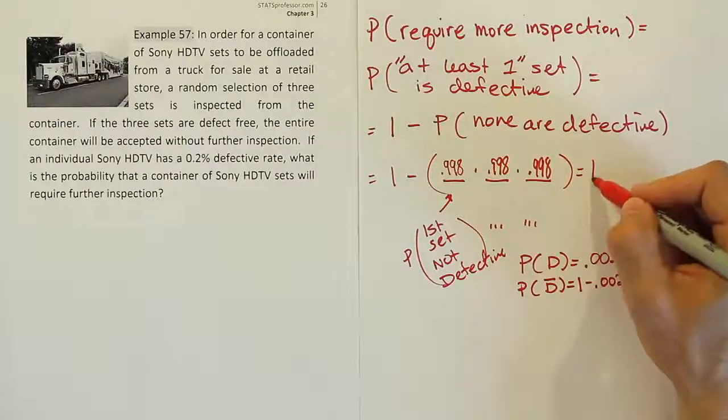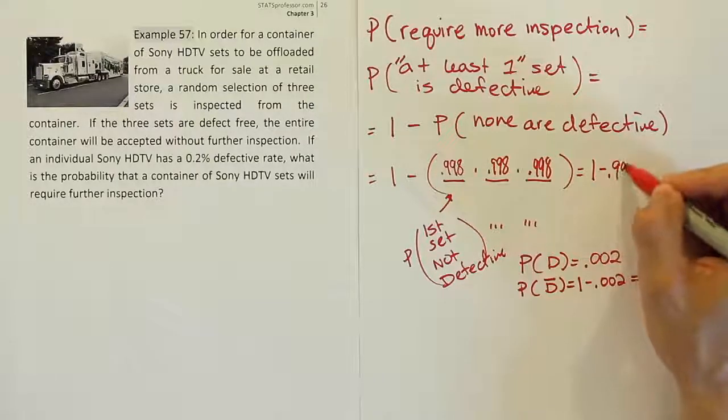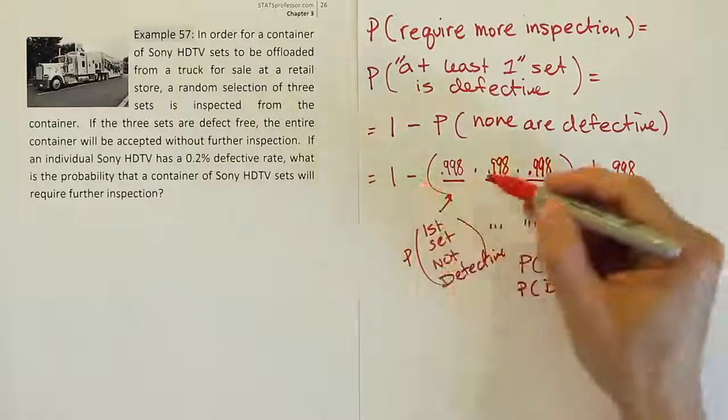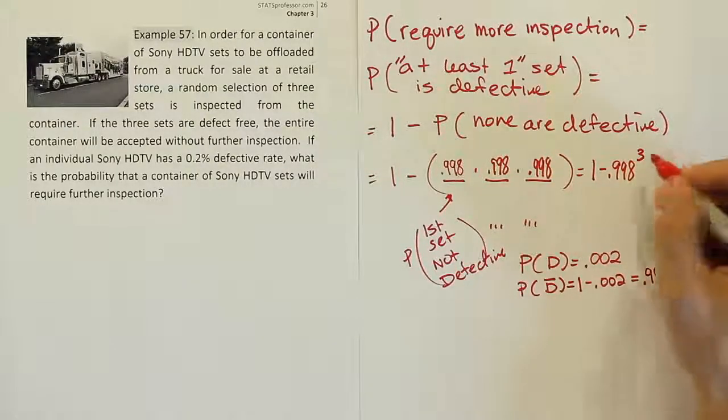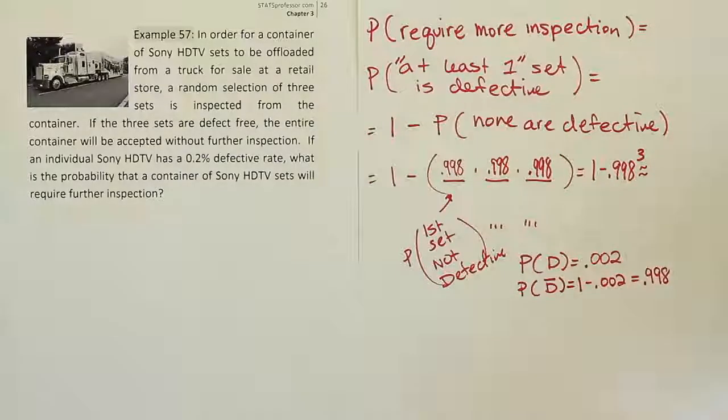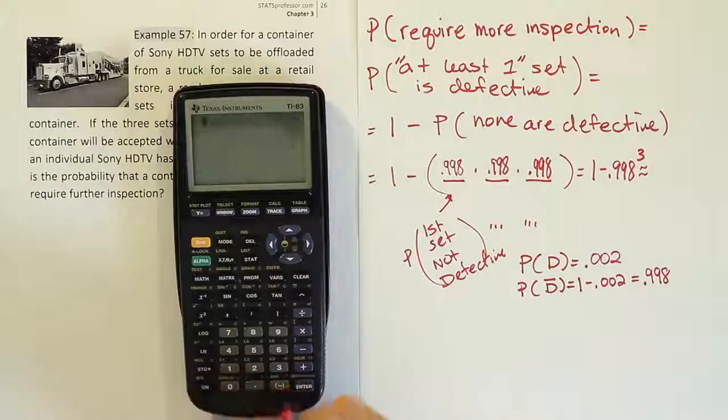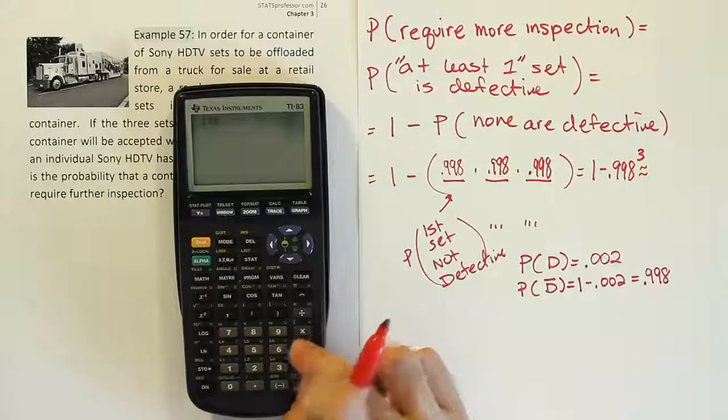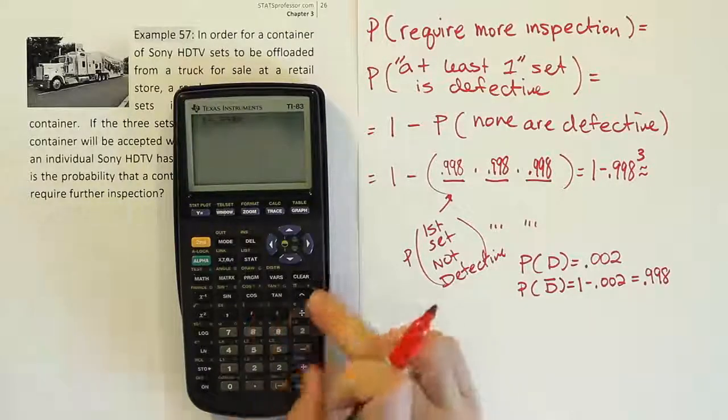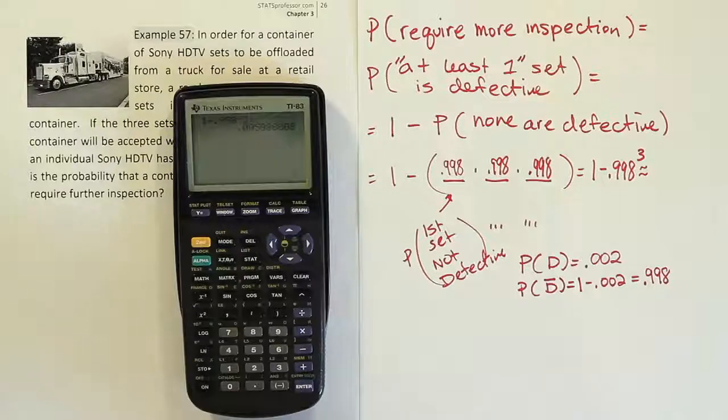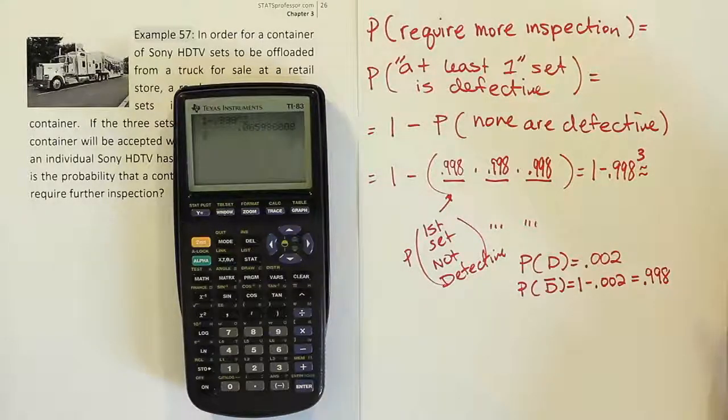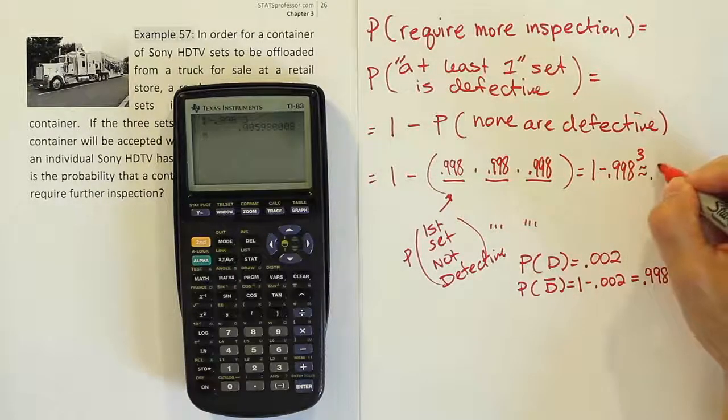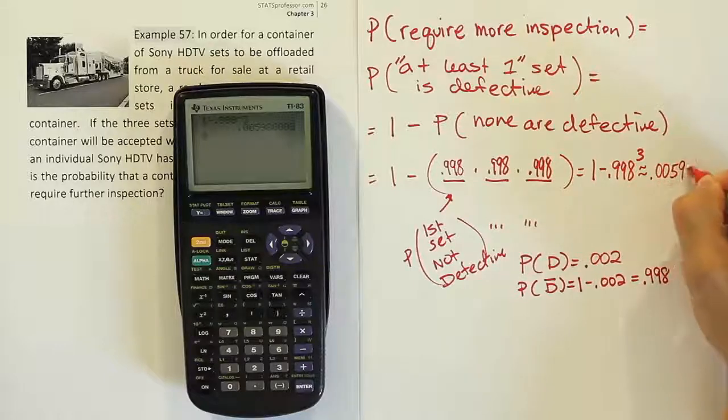And that means our answer for this problem is 1 minus 0.998, right? 1 minus 0.998 to the third power. Let's see what that works out to be as a decimal. When we check the answer, it's going to be 1 minus 0.998 raised to the third power. And we get the answer 0.00599. So 0.00599.